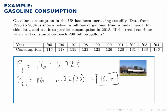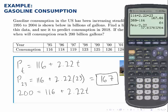I replace the consumption with 200, leaving t as the only unknown, and now we can solve for t. Subtract 116 from both sides and then divide by 2.22. This model predicts that about 38 years after 1995, consumption will reach 200 billion gallons. 38 years after 1995 corresponds to the year 2033.